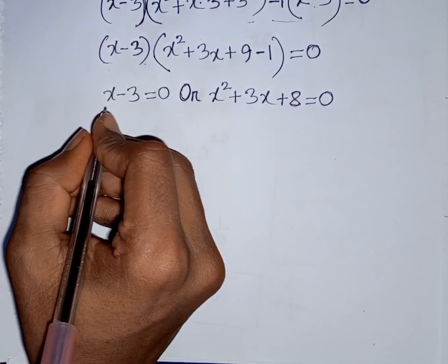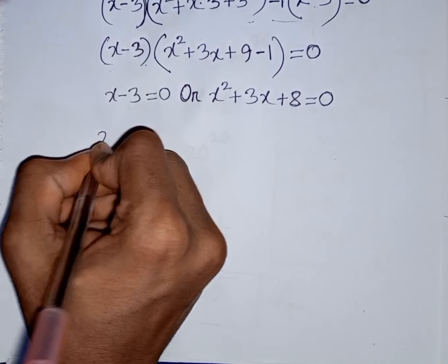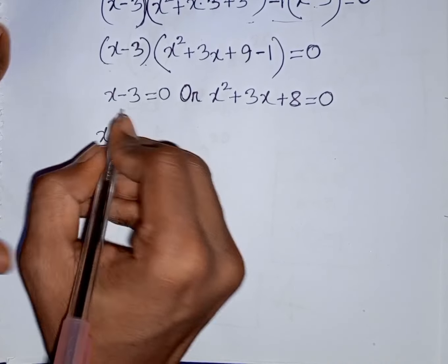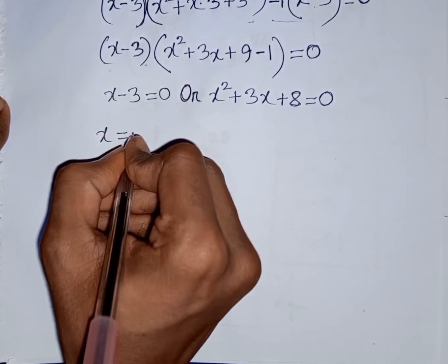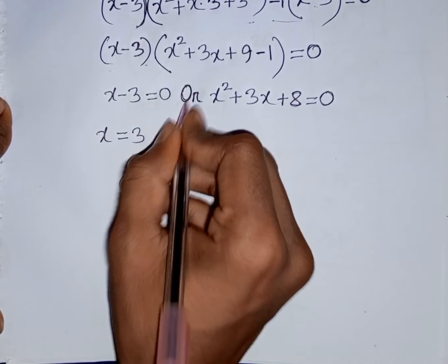Now, from x minus 3 equals 0, we take minus 3 to the right side, so x will be plus 3.